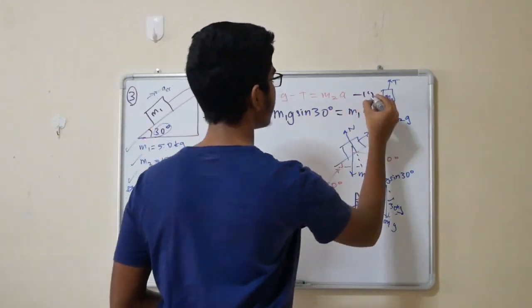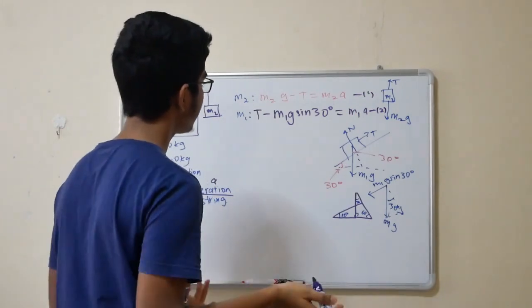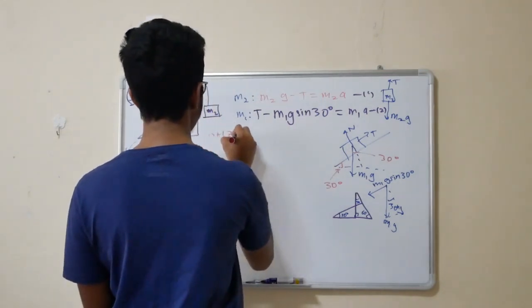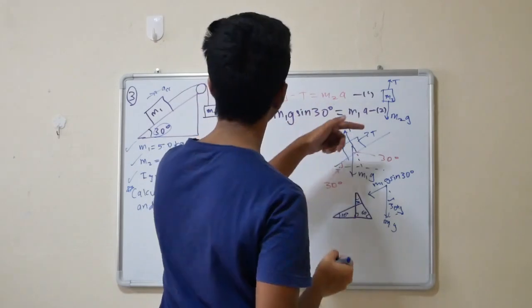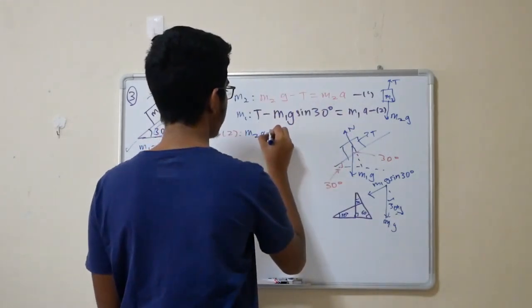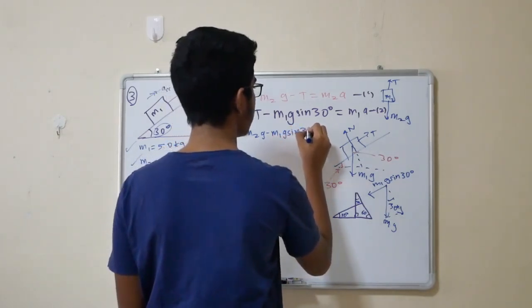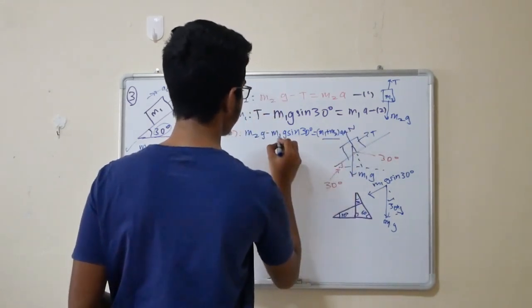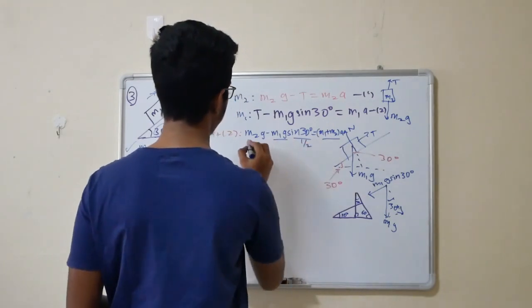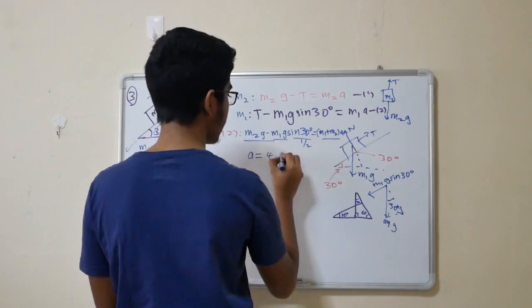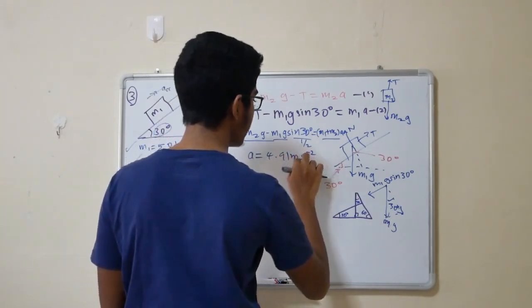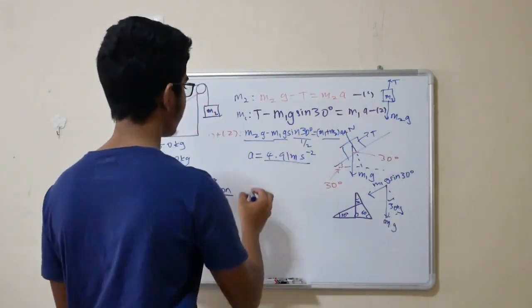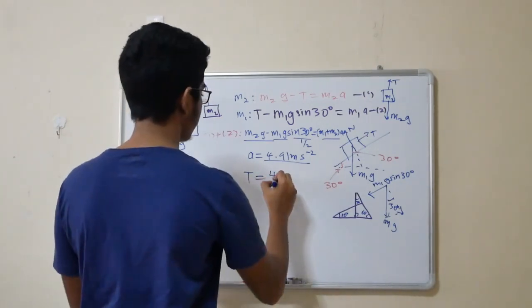What is left is removing one of the variables. Let's remove tension. Just add 1 plus 2 together. You remove tension. You get m2g minus m1g sin 30 degrees equals m1 plus m2 acceleration. You guys know this. You know this is half. Calculate acceleration. You'll get 4.91 meters per second square. Do leave a gap right here. Many people forget this gap. Now, you know acceleration. Very simple. Just substitute in one equation. Calculate tensional force. You will get 49 newtons.